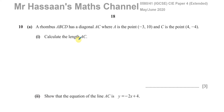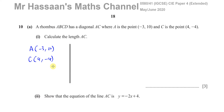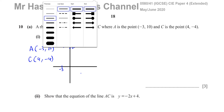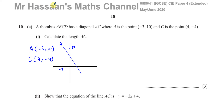Part one doesn't require us to use any of the ideas based upon it being a rhombus, because it just says find the length between A and C - these are two points. We just need to use the length formula. I'll make a little diagram to illustrate. Point A would be at (-3, 10) and point C would be at (4, -4). This is just a sketch to give you an idea of the line going from point A to point C.